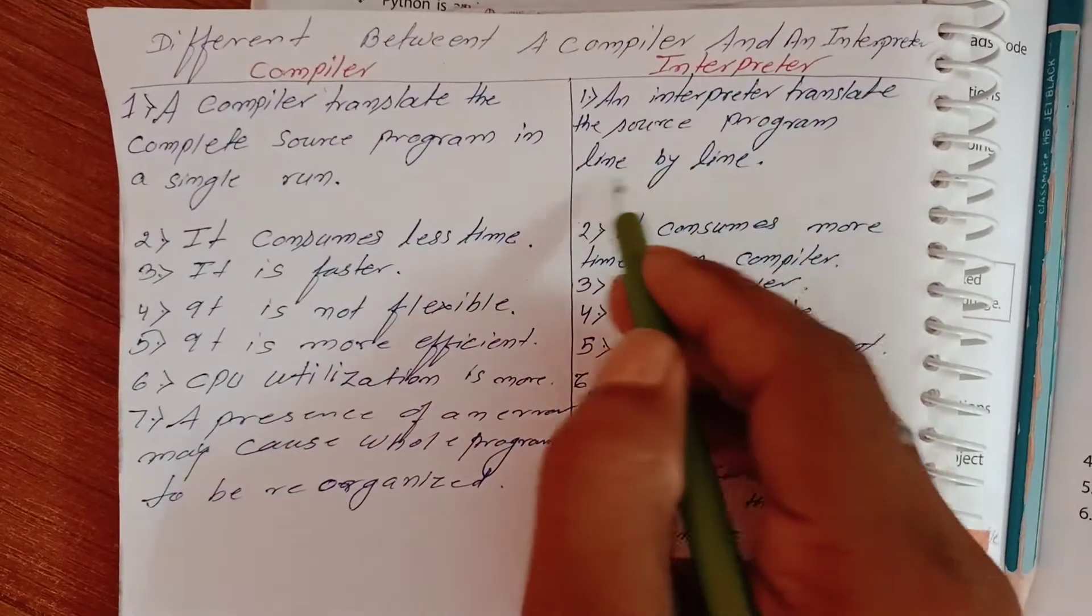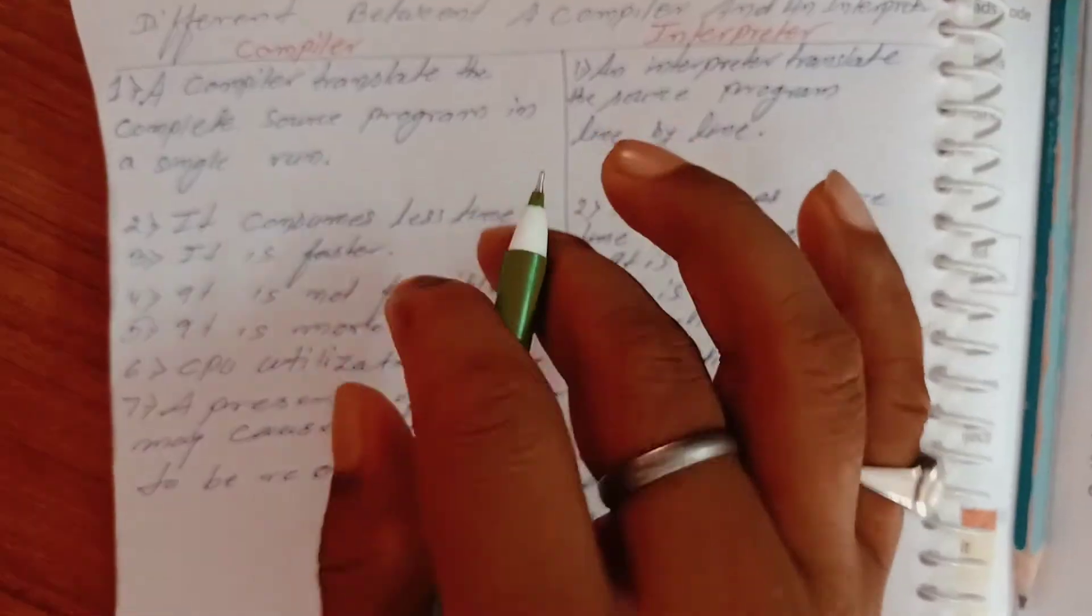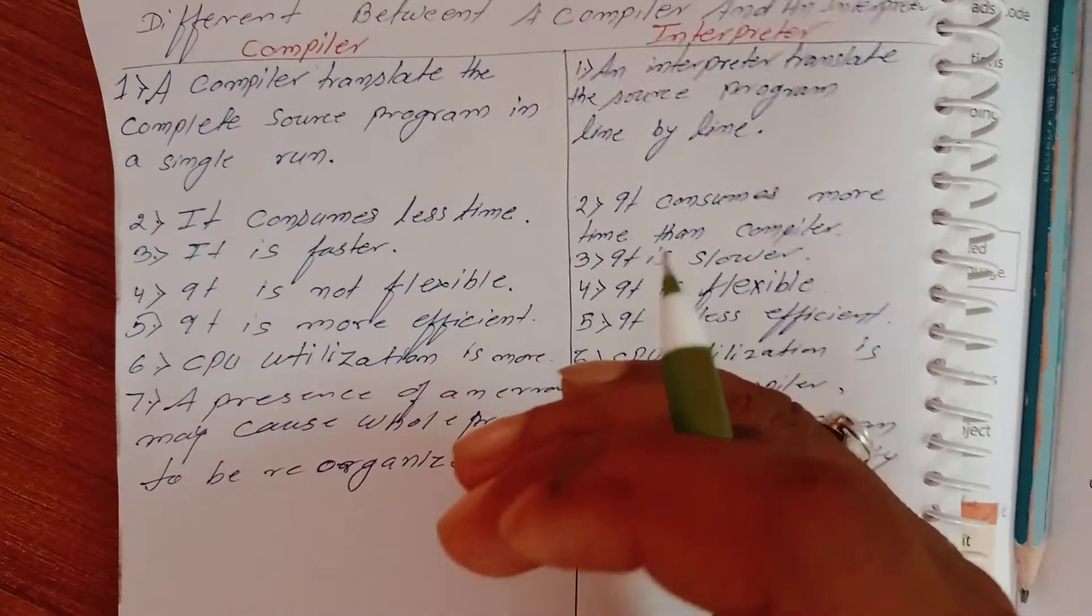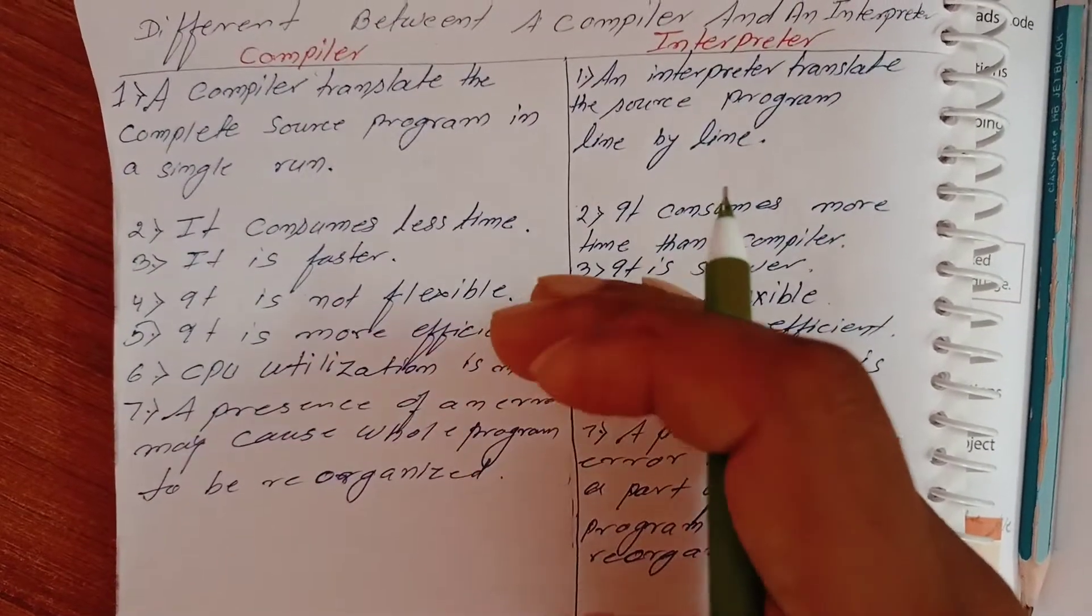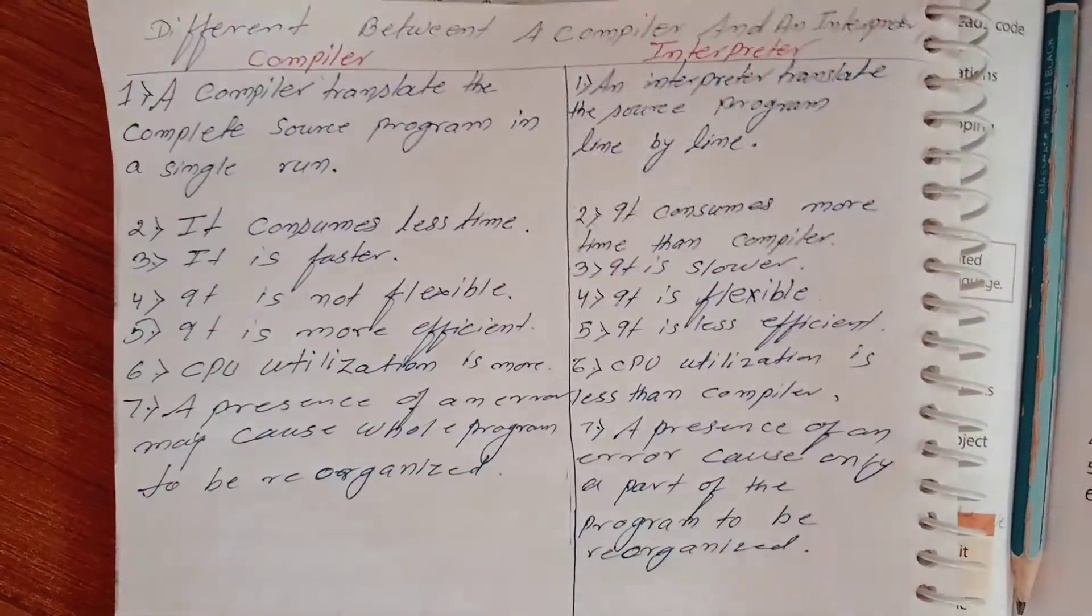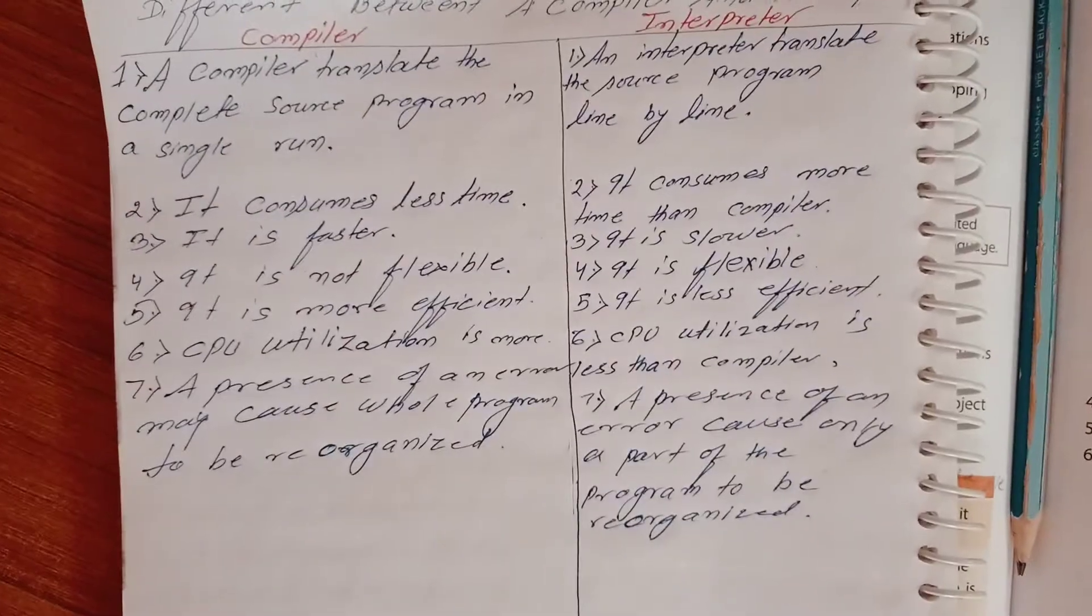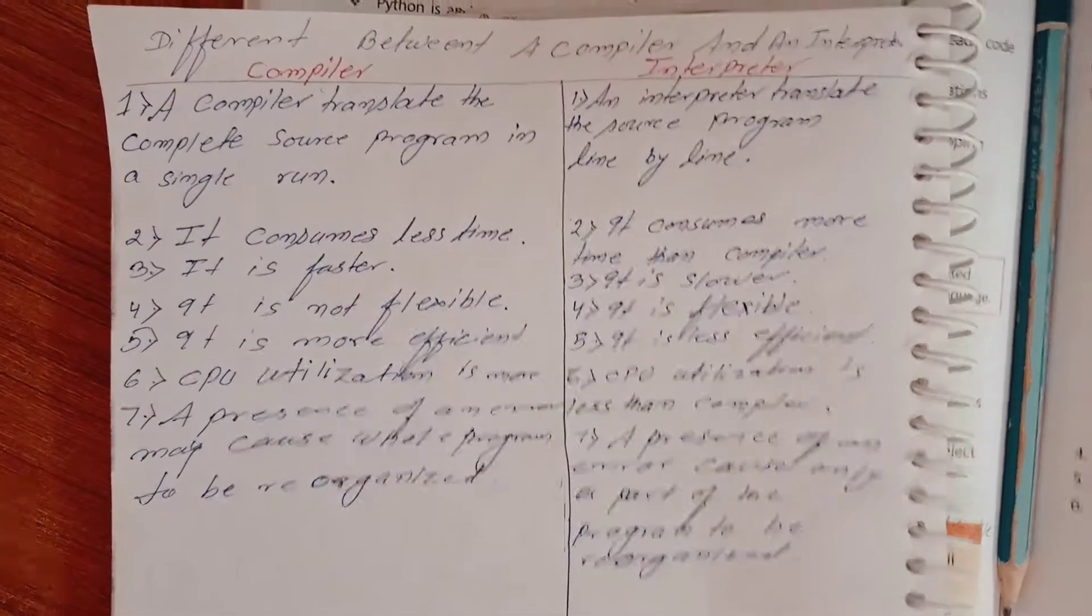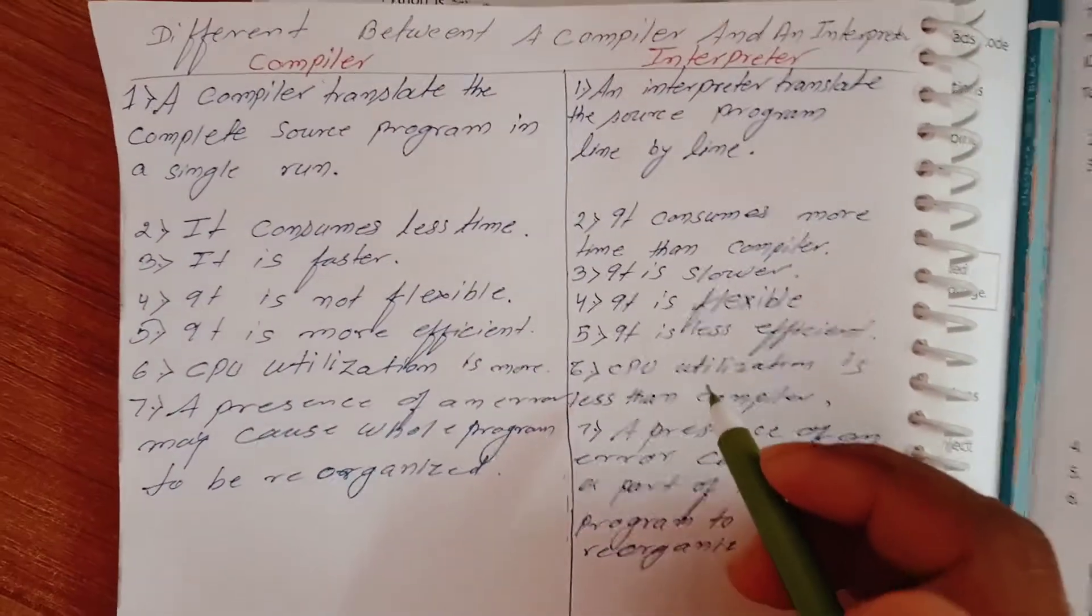Means first line complete, then second line, then third line, fourth line. It translates line by line, but compiler completes the whole program, the whole complete source in a single run.